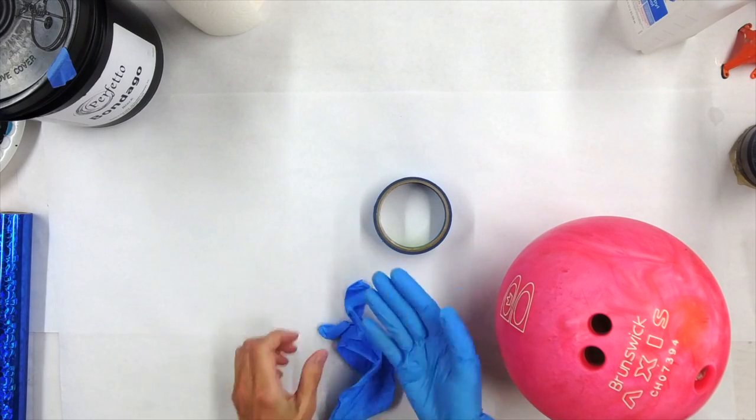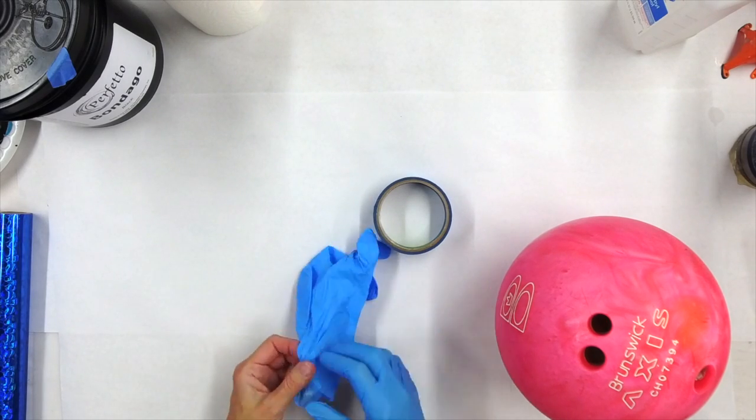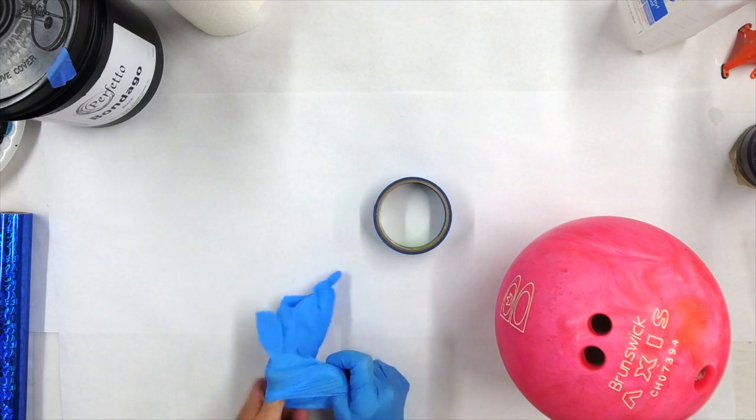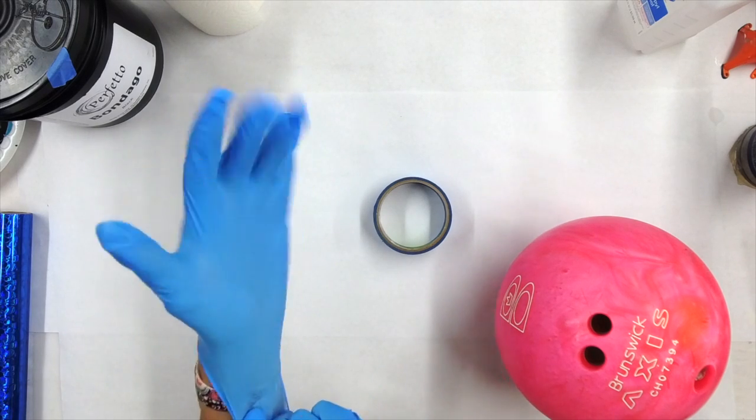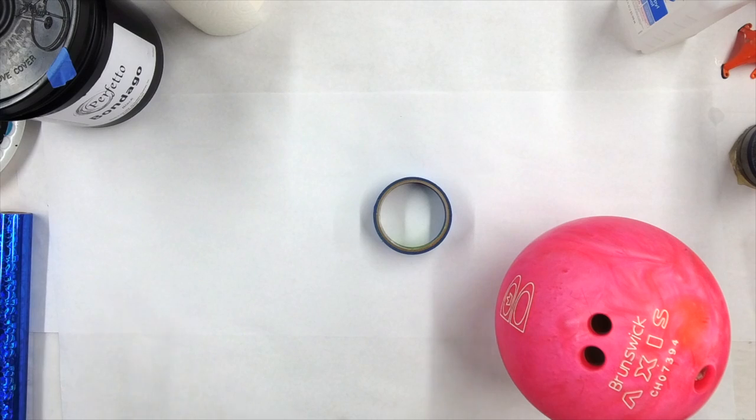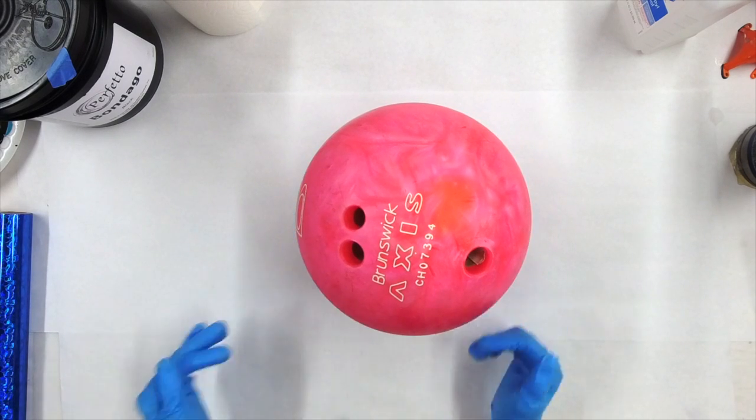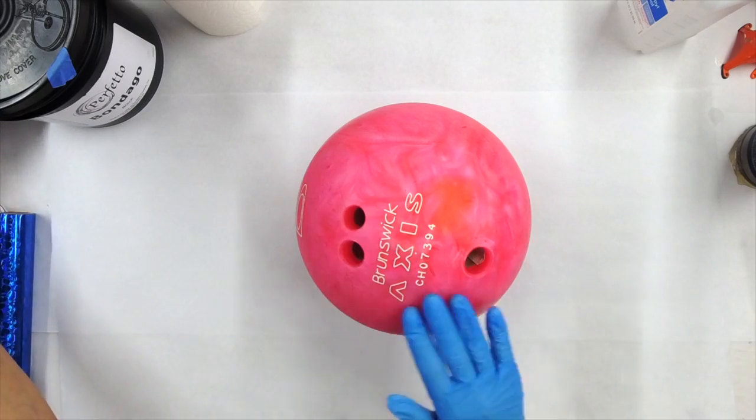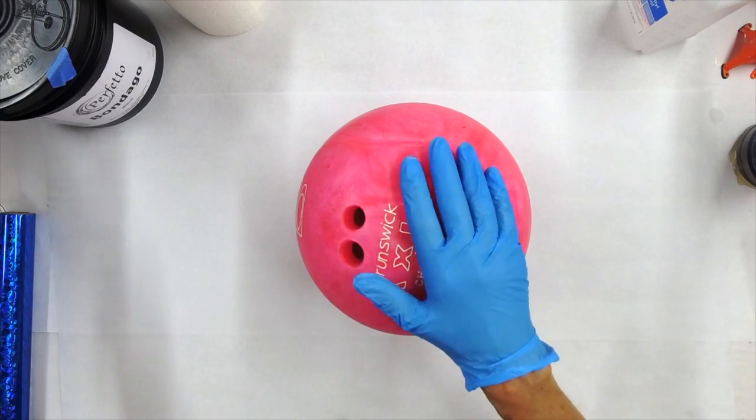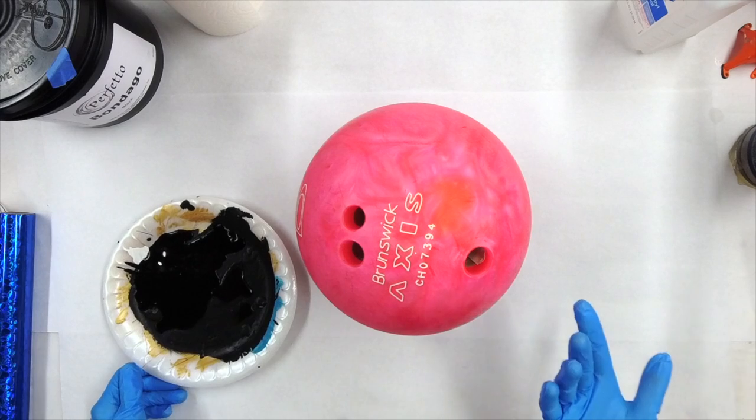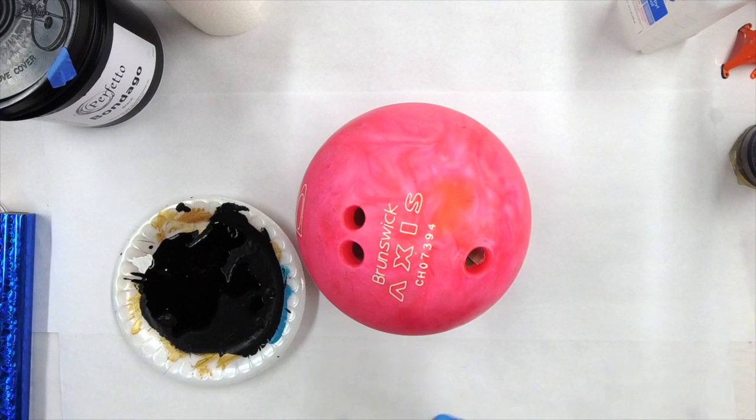And it's just the oils from our fingers can cause a resist or cause something not to adhere as well. And we've got to make sure that our Bondego is adhering super well because that is our paint and primer. I'm going to paint the bottom of this first, give it a little bit of a blow dry and then flip it over so that I can paint the rest.